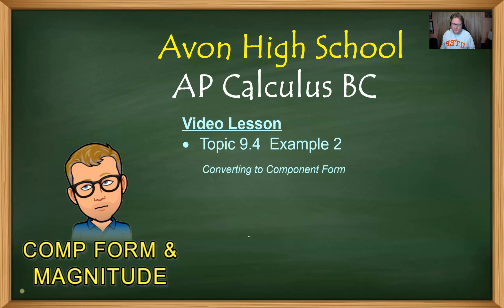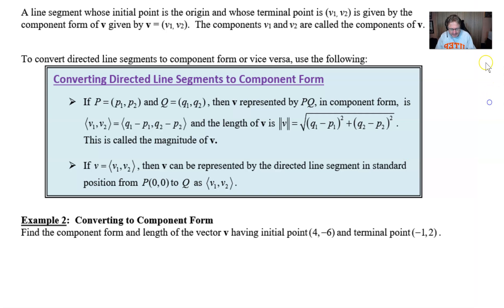I'm going to take a look at example 2 and we're going to introduce this idea called component form for vectors. We're going to revisit the idea of magnitude. So what do we have going on here? Well it says here that a line segment whose initial point is the origin and whose terminal point is some ordered pair we'll call for the sake of argument v sub 1 comma v sub 2 is given by the component form of vector v as v equals v1 comma v2.